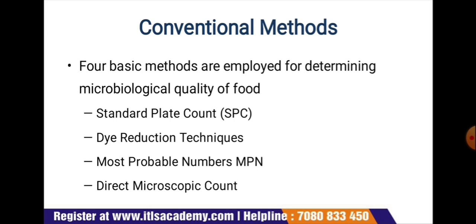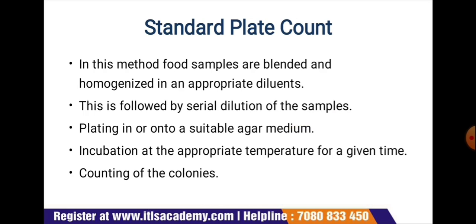There are four basic methods employed for determining the microbiological quality of food. First is the standard plate count, also called aerobic plate count, for viable cells or colony forming units. Second is the dye reduction technique, used to estimate the number of viable cells that possess reducing capacity. Third is the most probable number (MPN) method, a statistical determination of viable cells. Fourth is the direct microscopic count for both viable and non-viable cells.